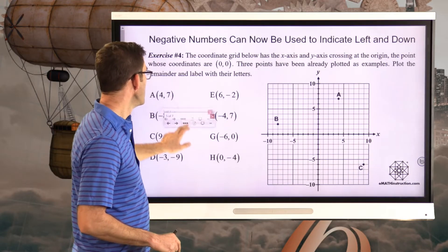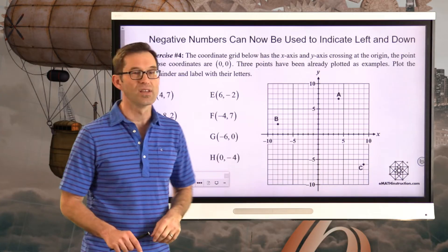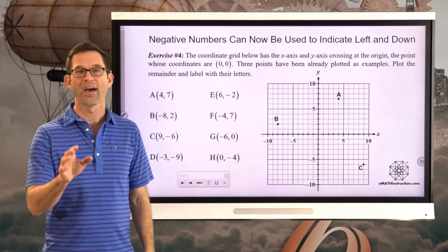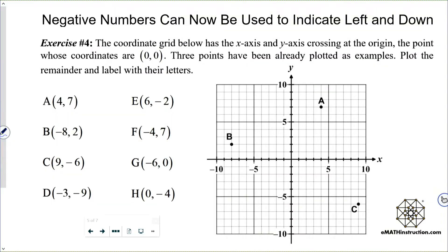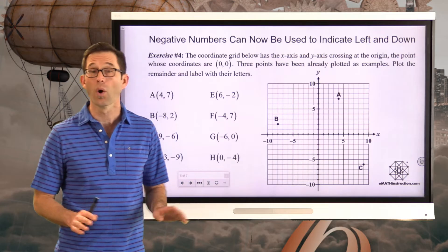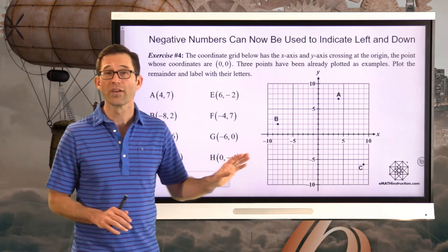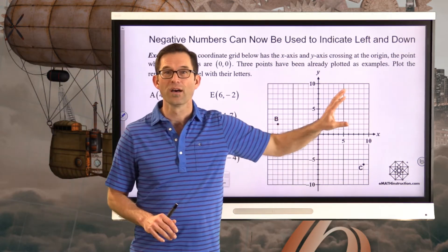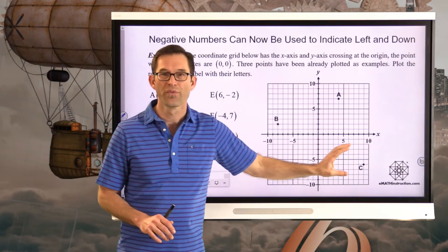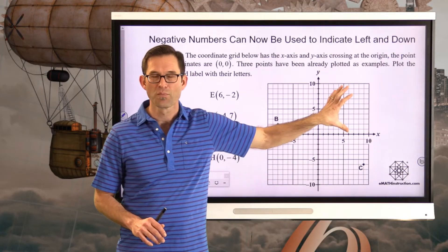Negative numbers can be used to indicate left and down. Exercise four introduces a coordinate grid where the x-axis and y-axis cross at the origin — the point 0 comma 0. Three points have already been plotted as examples. All you were looking at before was literally the upper-right portion; now we have all four sections of the grid.